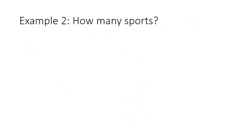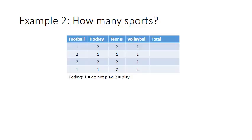Here's another example. Let's say I've asked people which sports they played. And I would like to know now how many sports they play in total. So for example, I've asked if people play football, hockey, tennis, or volleyball. And in this style, I've actually used a coding of 1 is do not play, and 2 is play.